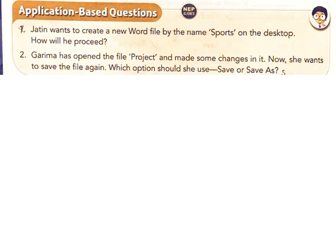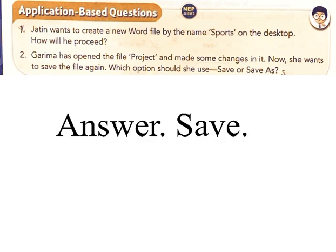v) Select Desktop, type 'Sports' as the file name, and then click the Save button. 2. Garima has opened the file 'Project' and made some changes in it. Now she wants to save the file again. Which option should she use — Save or Save As? Answer: She should use Save, to save the file with the existing file name.